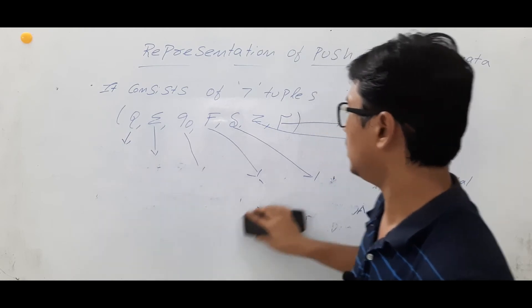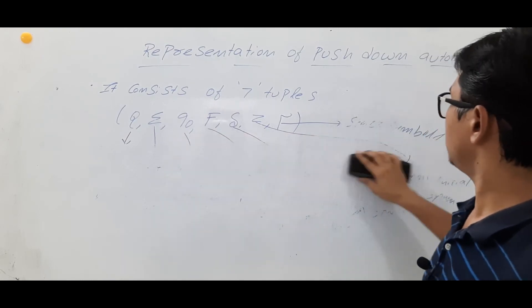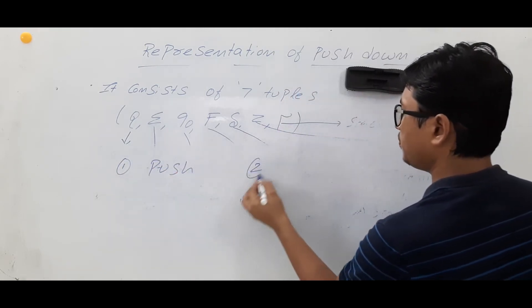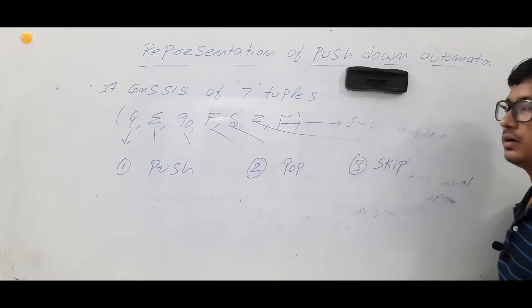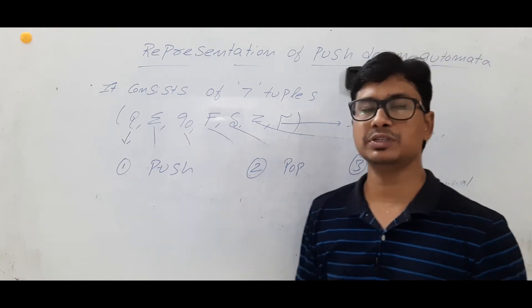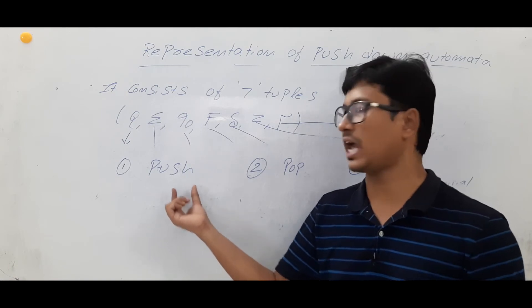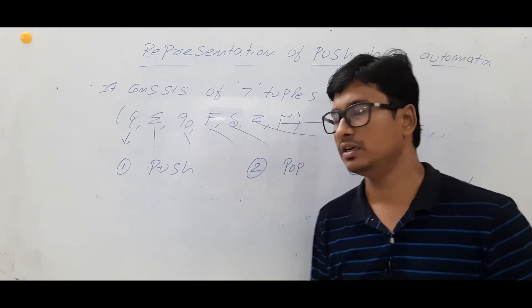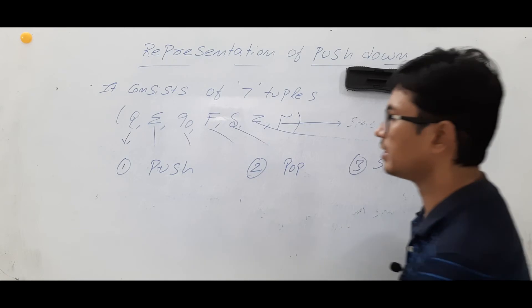Now we will discuss the basic operations in the pushdown automata. The basic operations can be classified as push, pop, and skip. Push means by looking at some symbol you are inserting an element into the stack. Pop means if you want to delete an element which is there in the stack. Skip means you don't want to perform any modification at all.